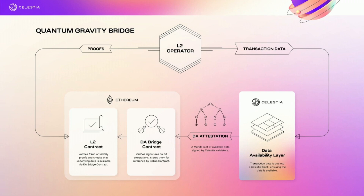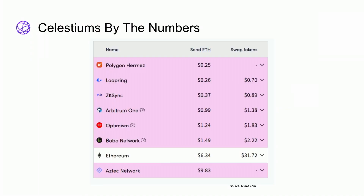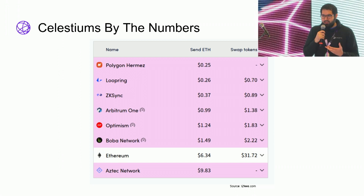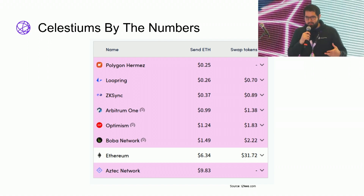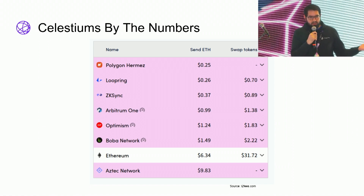With a data availability committee, you don't actually know the committee has been compromised — they've compromised you, but you don't know it. So Celestium is strictly better than a data availability committee. But why would anyone use this scheme over just using Ethereum for data availability? It's largely the same reason why rollup projects are exploring alternative data availability options: cost. If you post data to Ethereum, you're looking at something like a swap costing $2 on a good day with low transaction fees, as shown in this chart.